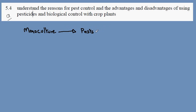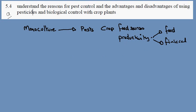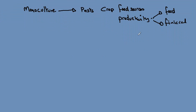Pests can be a variety of different types of living things that use the crop as their own food source. In doing so, this reduces the productivity of farming, resulting in a loss of food and a financial impact on the farmer. To overcome this, one potential solution is to use pesticides.